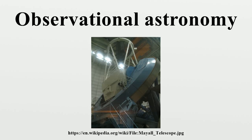Filters are used to view an object at particular frequencies or frequency ranges. Multilayer film filters can provide very precise control of the frequencies transmitted and blocked, so that, for example, objects can be viewed at a particular frequency emitted only by excited hydrogen atoms. Filters can also be used to partially compensate for the effects of light pollution by blocking out unwanted light. Polarization filters can also be used to determine if a source is emitting polarized light, and the orientation of the polarization.